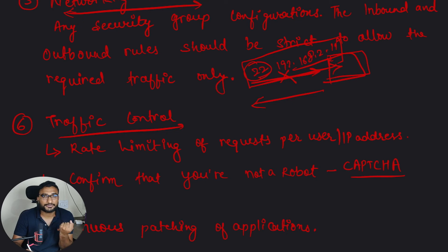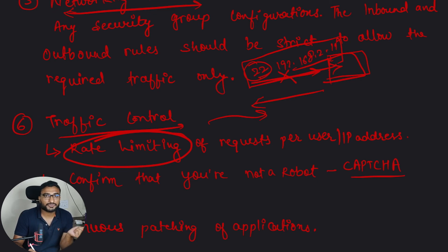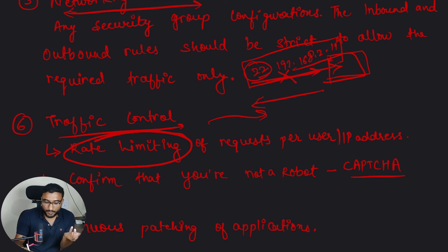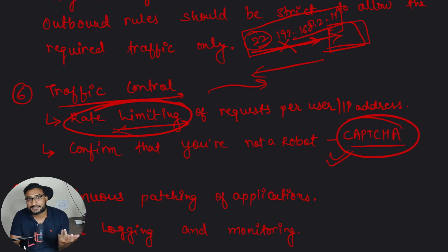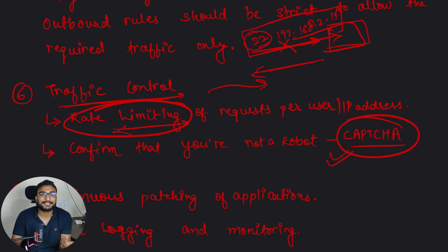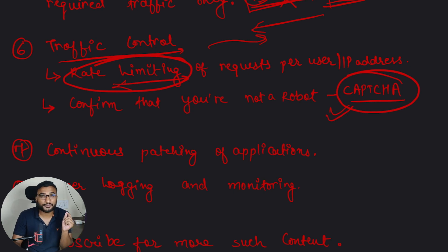Moving to traffic control: to secure your server you need to control traffic. One way is to rate limit requests. If you detect a large number of requests from a particular IP — say 100 requests per second — that is unnatural for human users, and you can block or rate limit that traffic so your servers are not impacted. Another way is CAPTCHA, where users must confirm they are not a robot by clicking and selecting pictures, validating them before allowing access to the website.